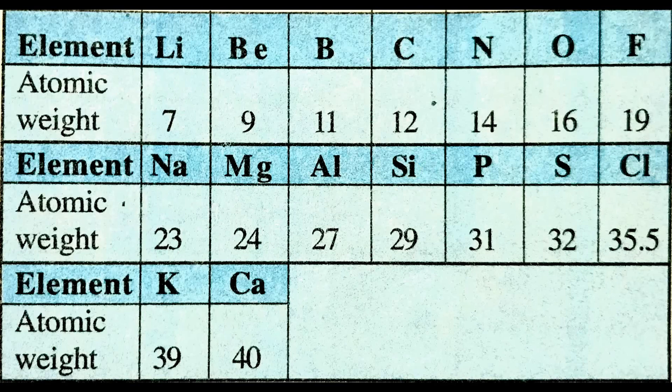Everything was fine for Newland, but here comes a problem. Newland was able to arrange these elements in the system where the first element has similar properties to the eighth element only up to calcium. His law worked only up to calcium.